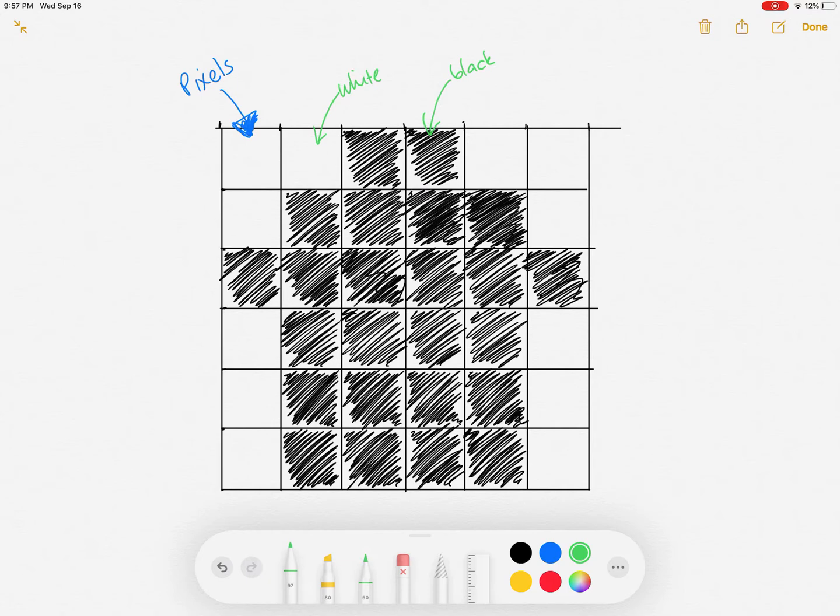And the computer does that using binary. Now if I've only got two colors like I have in this picture I just need one bit. So I need one zero or one one bit.